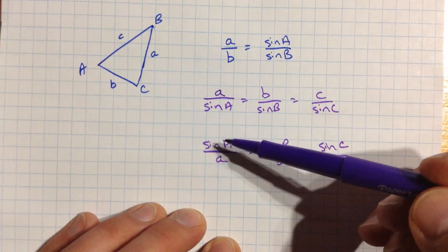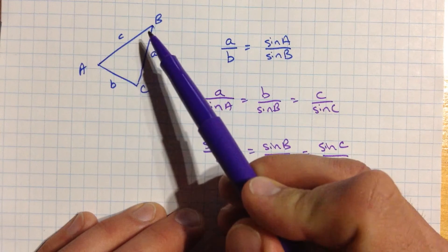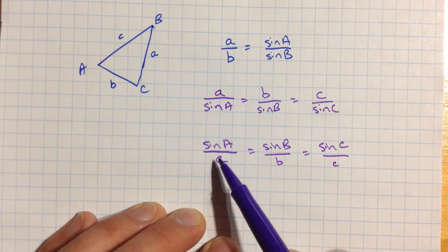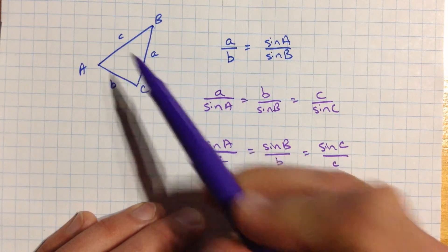And it's really important that you get these straight. These are capitals on the top because those are angles: A, B, and C. And these are lowercase letters down here because those are side lengths: a, b, and c.